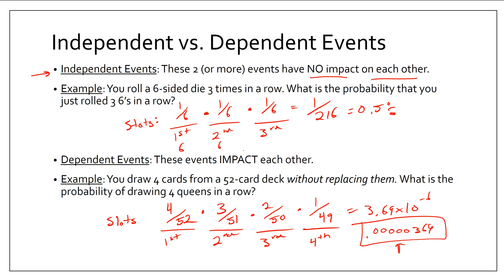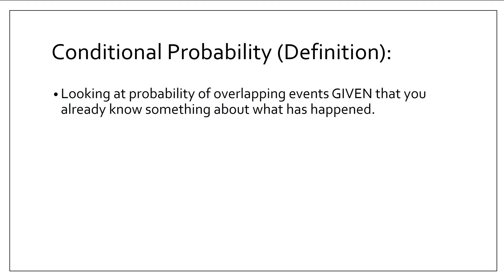Summary: both of these can be solved with slots. Independent events don't impact each other — like rolling a die or flipping a coin. Dependent events do impact each other — like when I draw a card out, the deck is just a little bit different than it was the first time. There's one other aspect of this section: conditional probability. We're going to go back to looking at overlapping events, but here we're calculating the probability given that we already know something happened.